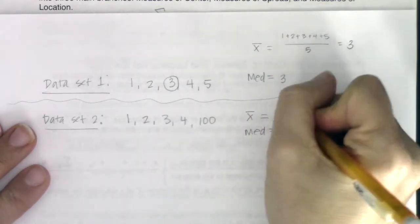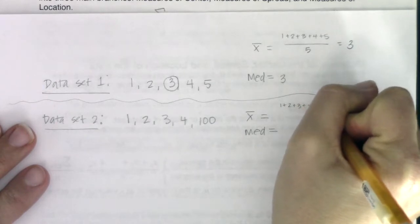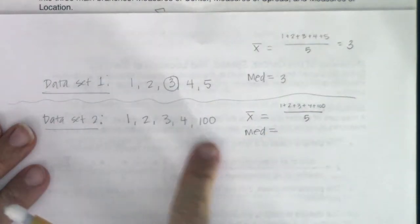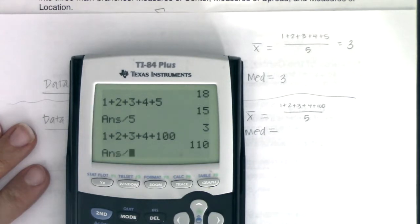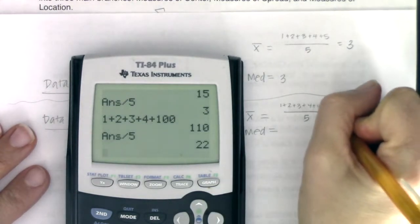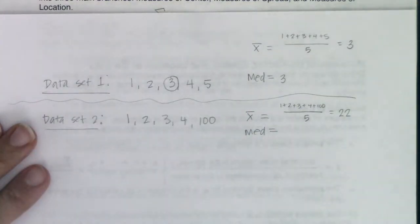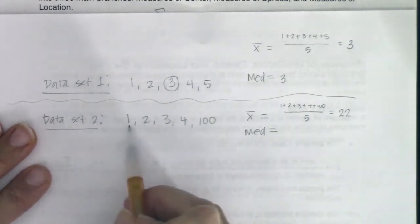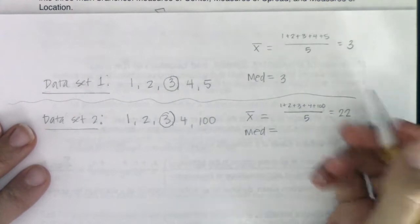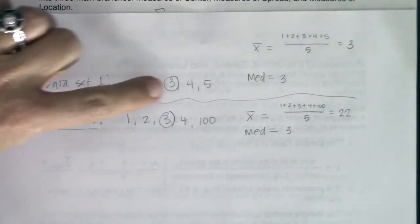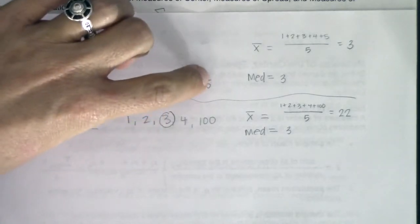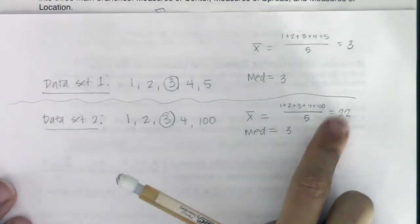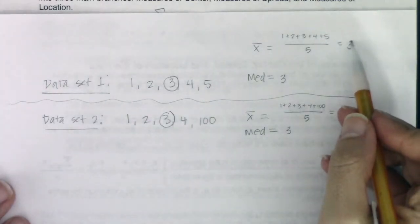For x-bar, I add these numbers together and divide by five because I still have five data points — it's just one is an outlier. The mean definitely changed — it went from 3 to 22. For the median, I order these from low to high, which they already are, and the middle number is still 3. The median stayed the same — it resisted the outlier. The mean was definitely affected by outliers — it jumped from 3 to 22.